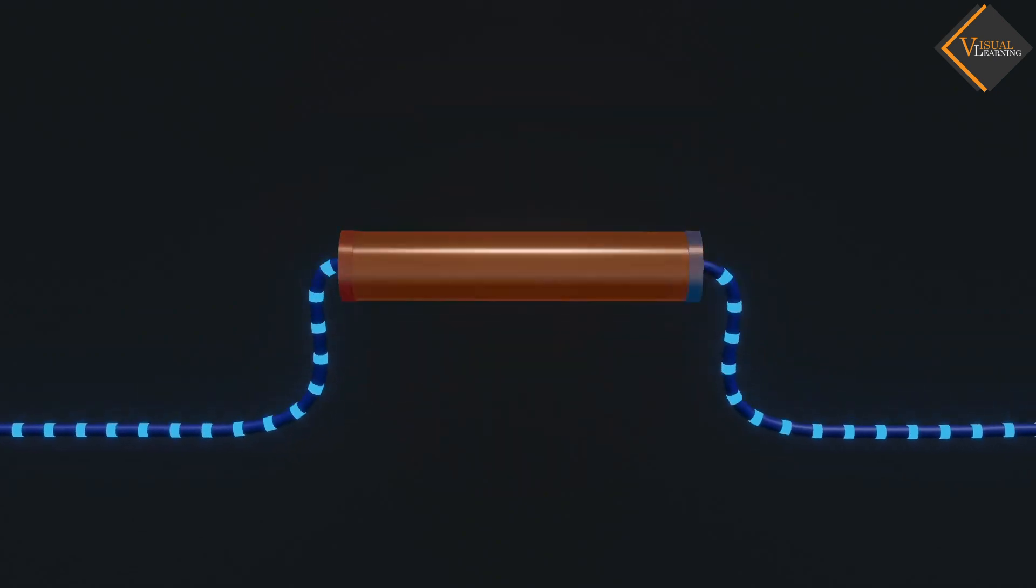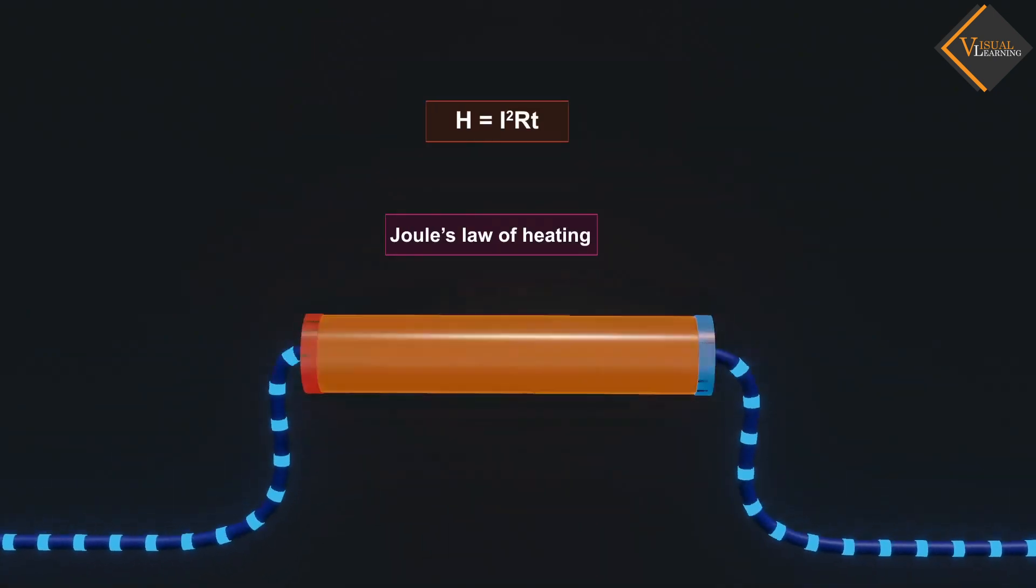Heat can be represented as H equals I squared Rt. This is known as Joule's law of heating.